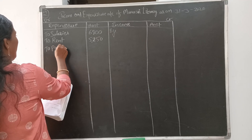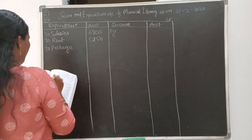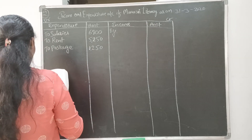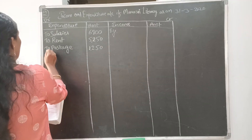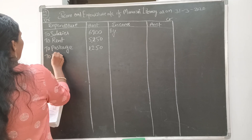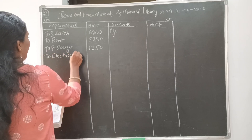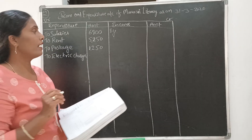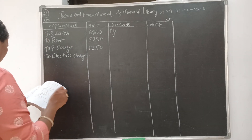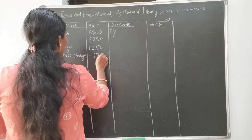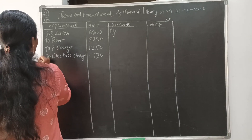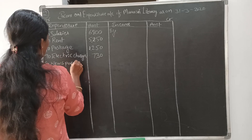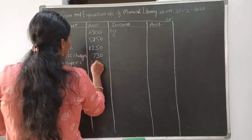Postage amount is 1250. Next, electric charges — only revenue expenditure and revenue income we consider in this account, so electric charges is also a recurring expense: 730. Then newspapers: 3700.